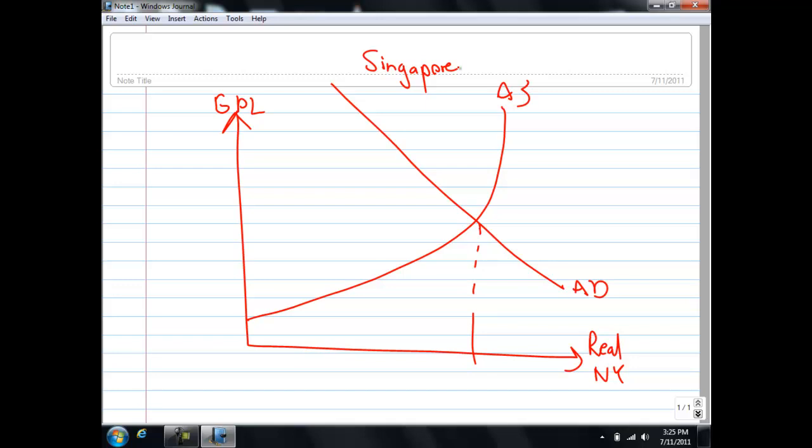As our exports fall, the AD curve shifts to the left. You can see we started from YE1 and now we are at YE2, where YF is here.